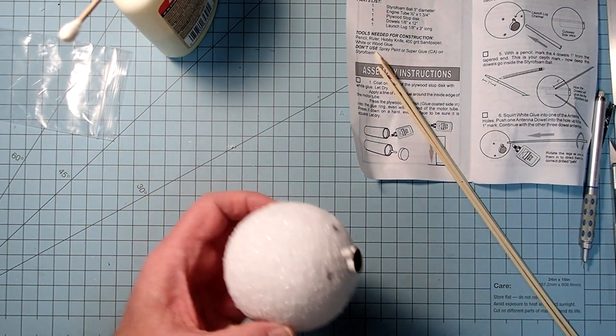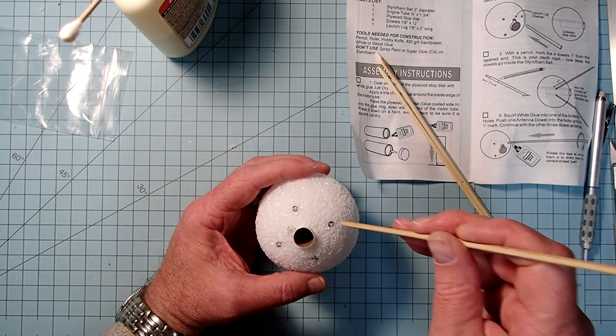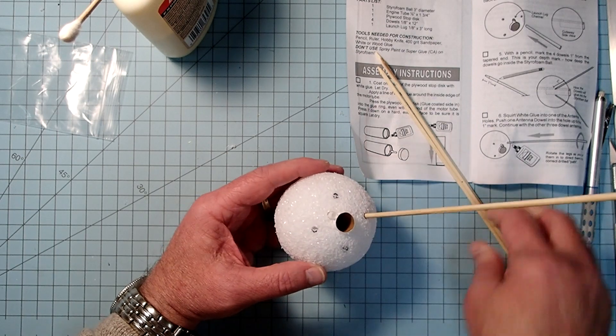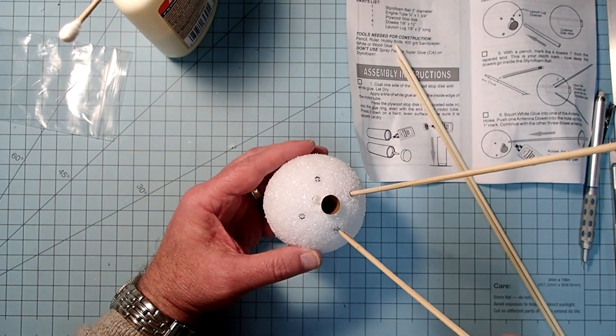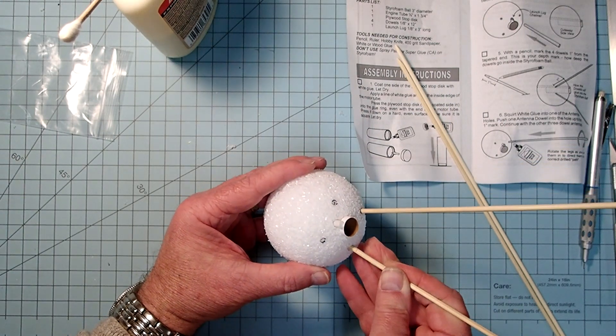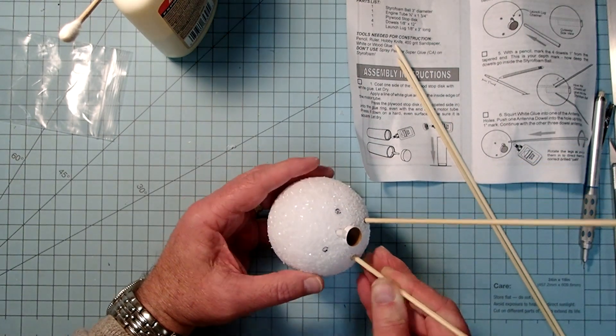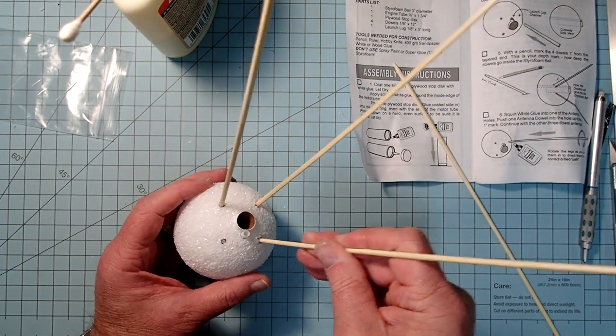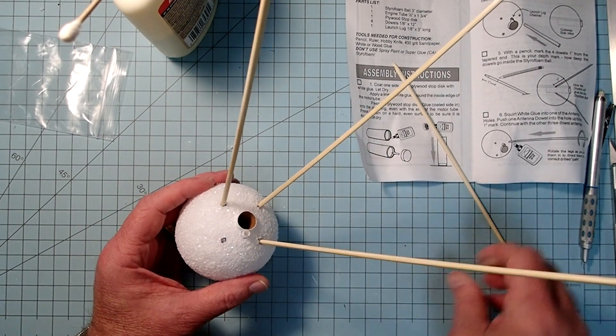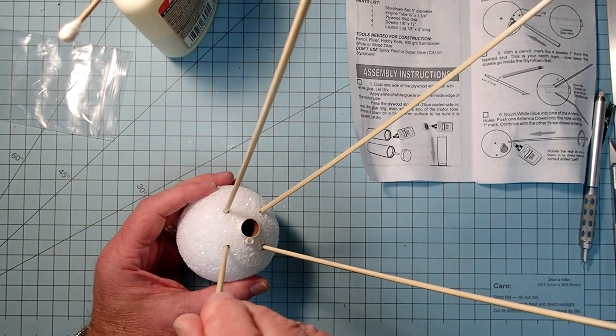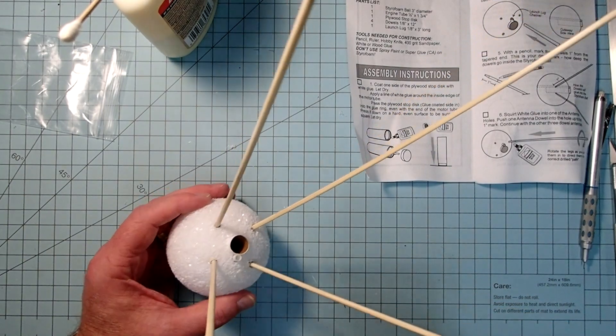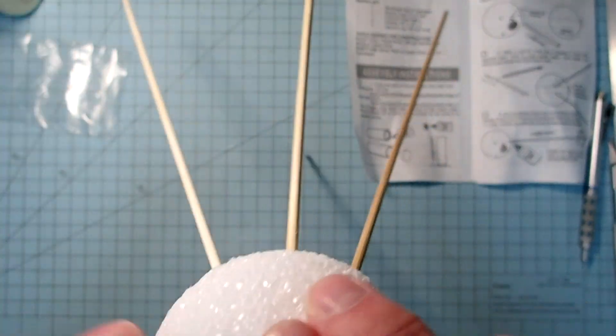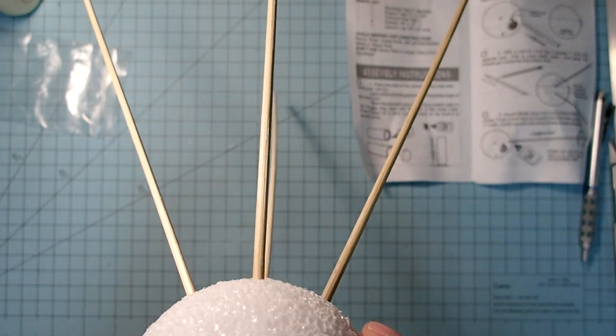And then each of these is going to go in the four holes down here up to that marking. And then we want to look and make sure everything is straight and square.